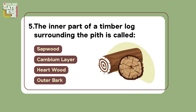Question 5: The inner part of a timber log surrounding the pith is called — (A) sapwood, (B) cambium layer, (C) hardwood, (D) outer bark.